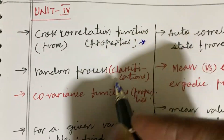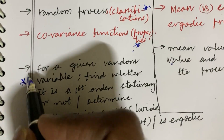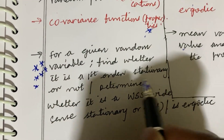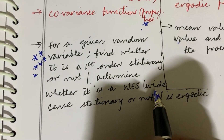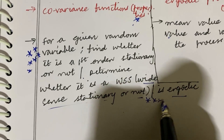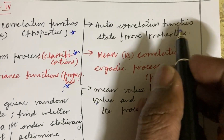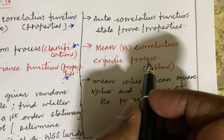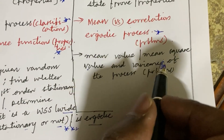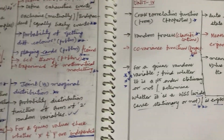Moving to Unit 4: Cross-correlation function — state, prove, and properties. Random process — classify them. Covariance functions and their properties. For a given random process, find whether it is first-order stationary or not, or determine whether it is wide-sense stationary or not — this is a damn sure question. Auto-correlation function — state, prove, and properties — such questions may occur in long and short form. Mean versus correlation. Ergodic process and related problems, including mean value, mean square value, and variance of the process.